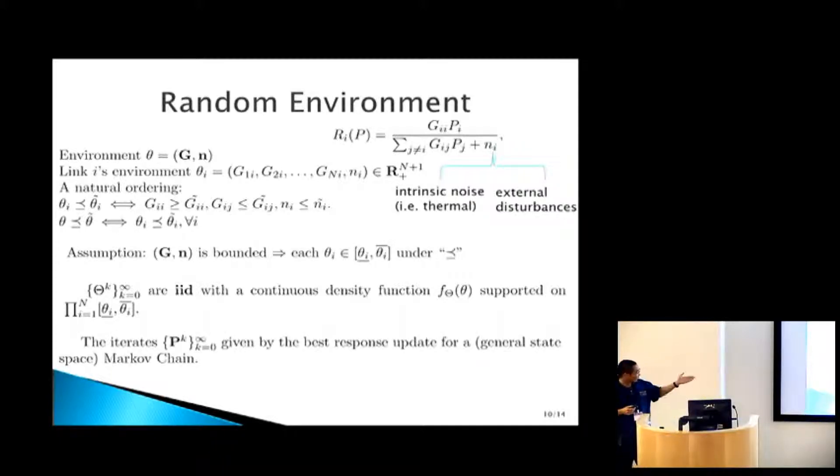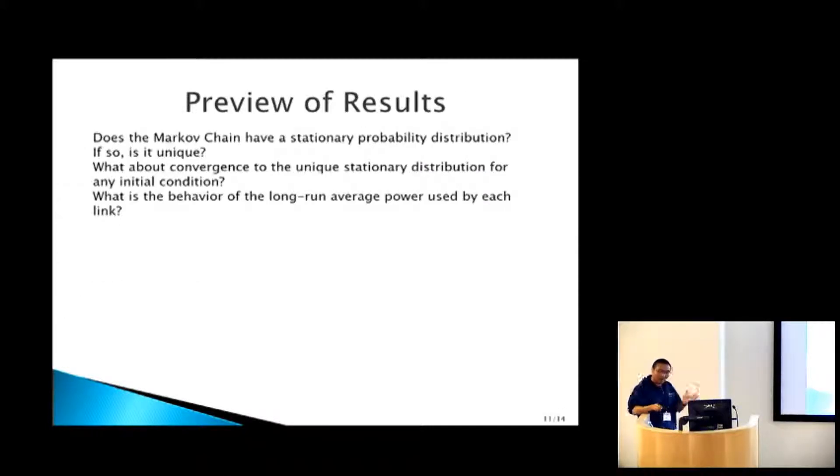The question would be, what would happen to the power iterates? Does the Markov chain have a stationary distribution? Is it unique? What's the convergence? And also, finally, you can ask the question, what you care about. One thing you care about is, what's the long run average power used? The average power used for fixed horizon is a random variable. What kind of behavior can we say about that? Is there any high concentration thing we can establish?